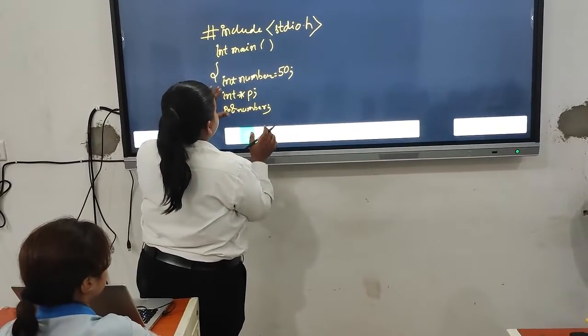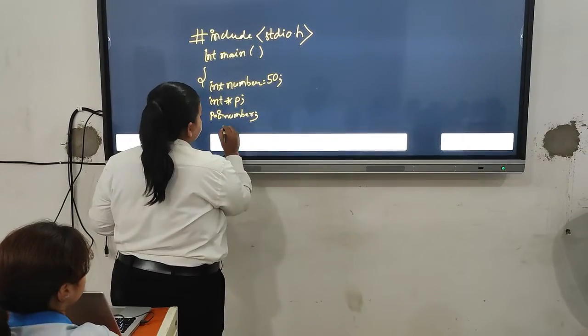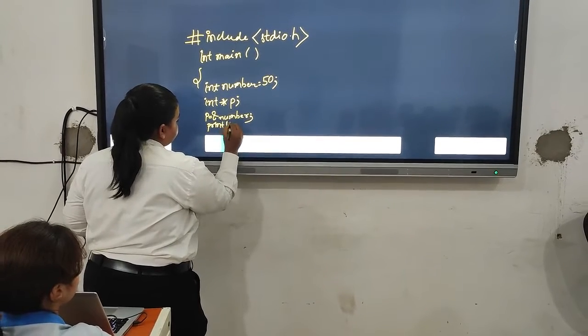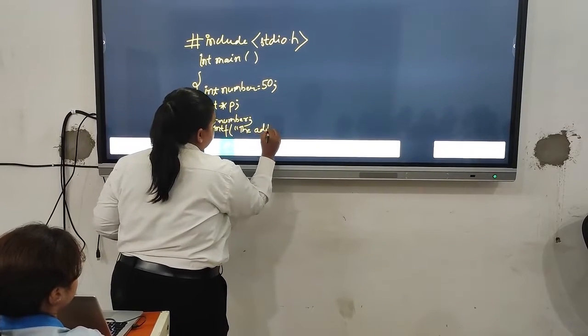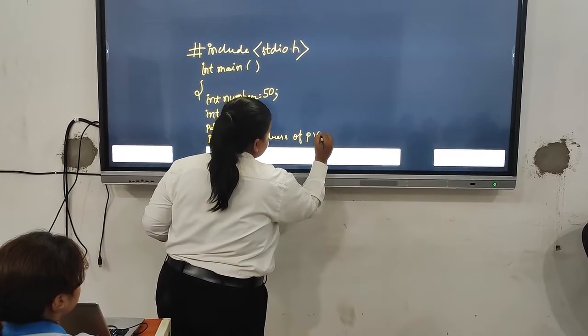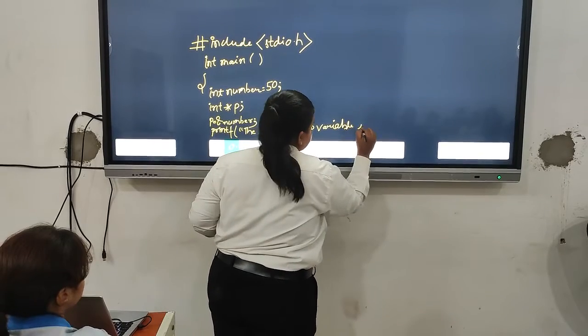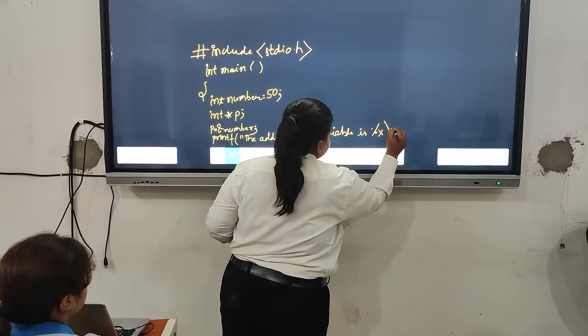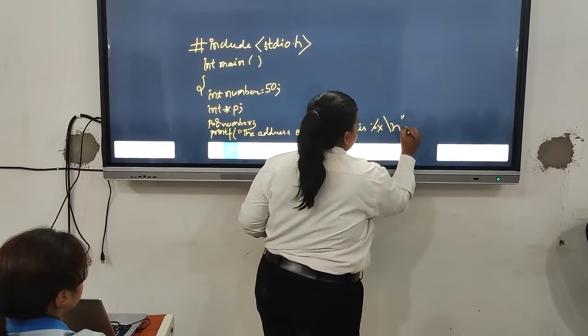Here ampersand number is pointing to the address of number variable. Now we will write printf, the address of p variable is %x slash n. We are using here slash n for the new line. Now we will write here p.